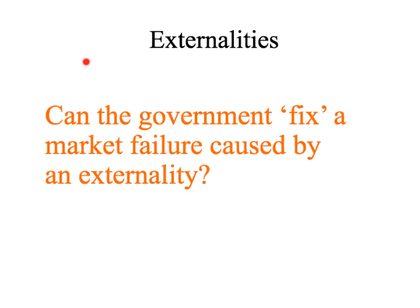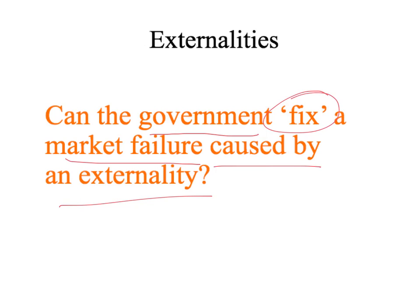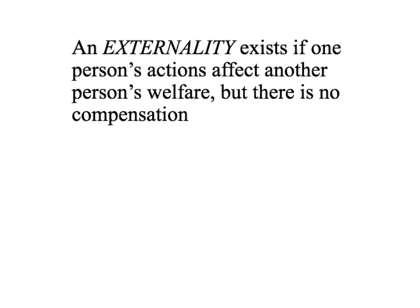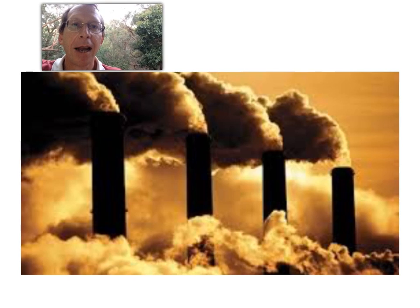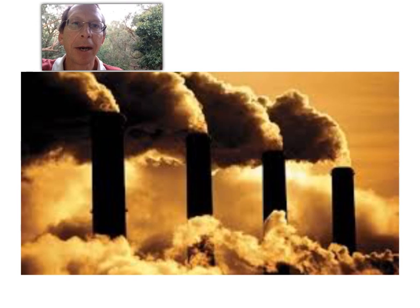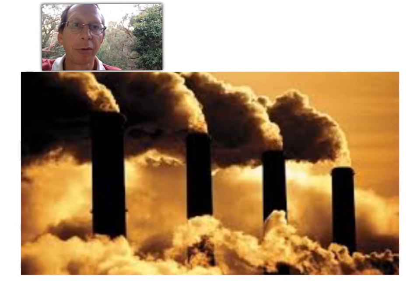Our topic is still externalities, and we're looking at whether the government can fix a market failure caused by an externality. Today we're going to be looking at the case of a negative externality. An externality exists if one person's actions affect another person's welfare, but there is no compensation. Last time we looked at the case of a positive externality and how the government could subsidize the product — in that case deodorant — to eliminate the deadweight loss associated with a perfectly competitive market.